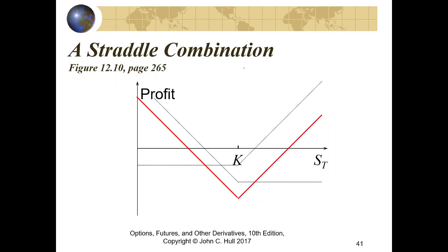The most popular strategy in combinations is called a straddle. In a straddle, we enter into a put option with a strike price K and also a call option with a strike price K. This strategy will be profitable only if there is a large volatility in the underlying stock.